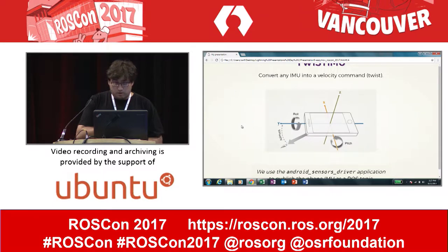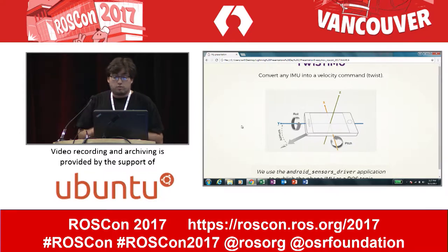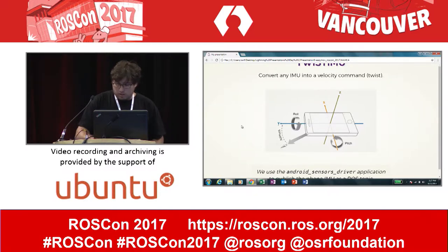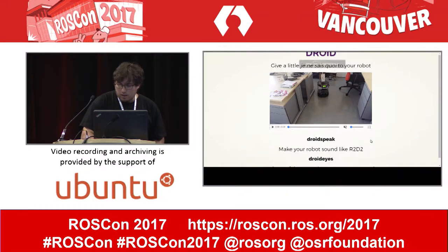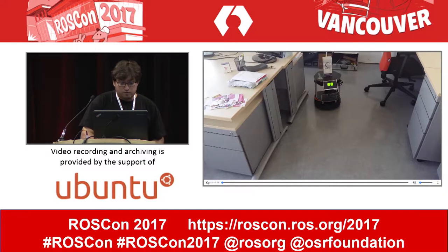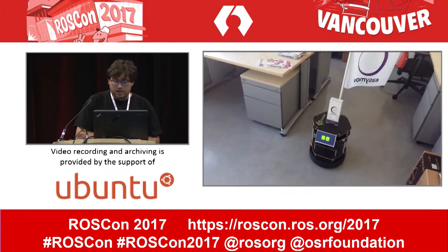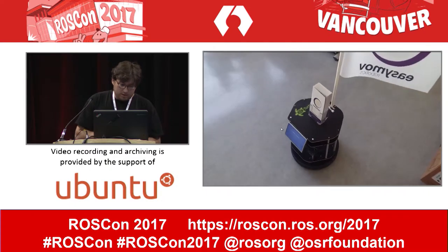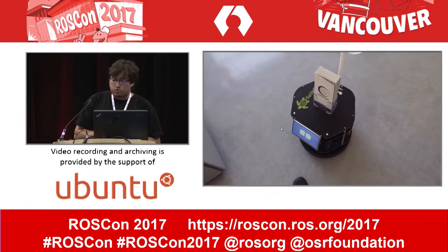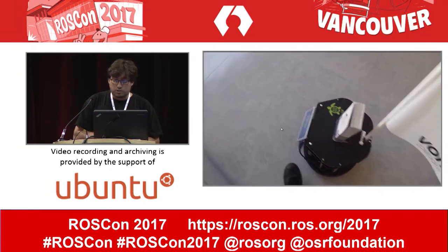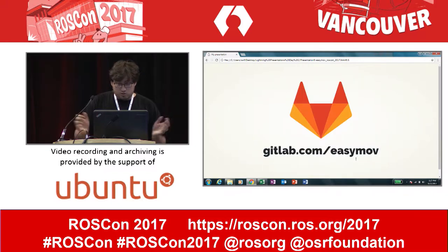The other one is called Twisty — it basically transforms any kind of IMU to a velocity command. We use it with an Android sensor driver application to control our robots with our phone. The last one, and the more whimsical one, is called Droid. It's software to give a little emotion to your robots — there are two nodes: droid_eyes to show little emotion on the screen, and droid_speak which makes the robot talk like R2-D2. Check out our GitLab, give us feedback, and enjoy. Thank you.